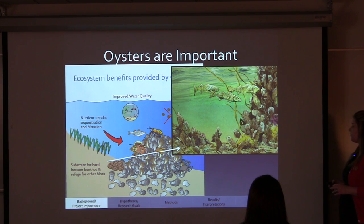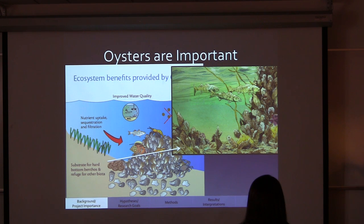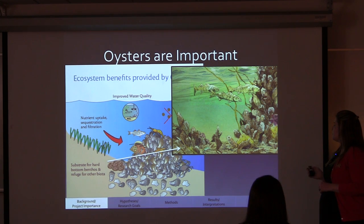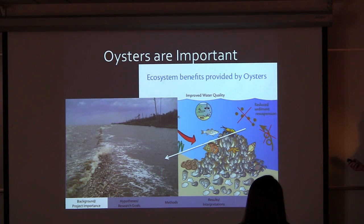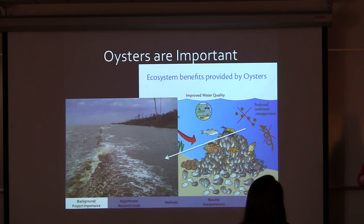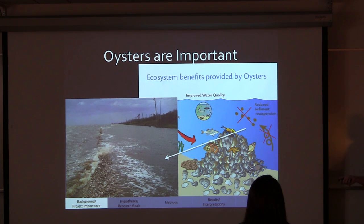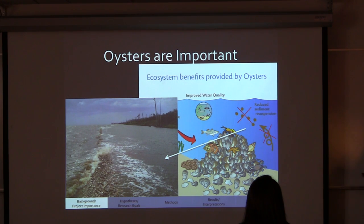Oysters also provide a hard substrate for other organisms to attach to. They cement using their left valve and build reefs on top of each other, allowing other organisms to attach and build as well. They also reduce sediment resuspension, allowing looser sediment to become more compacted, and provide a natural breakwater along our coast that helps prevent coastal erosion.